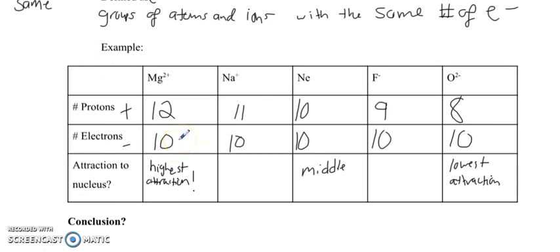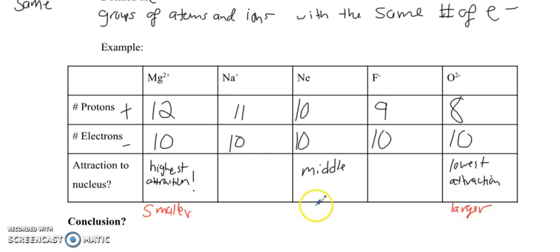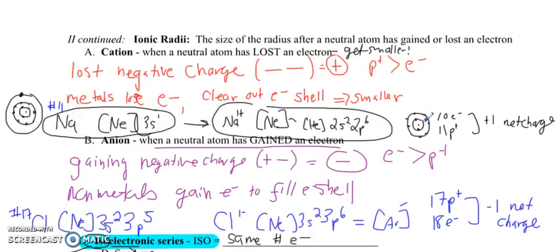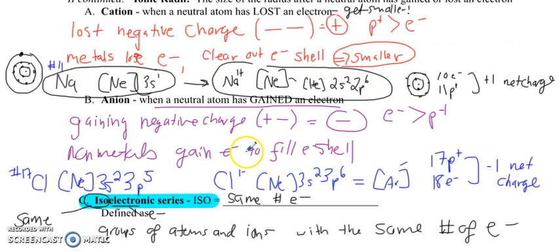So which of these will be the largest? High attraction means the electron cloud is pulled in tight — making it smaller. Low attraction means the electron cloud can expand more — making it larger. In general, cations lose a shell and become smaller. Anions fill a shell; with less nuclear attraction, they become larger. We'll explore that more with some plotting and graphing later.